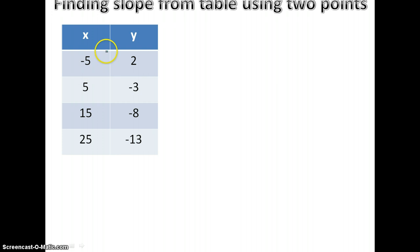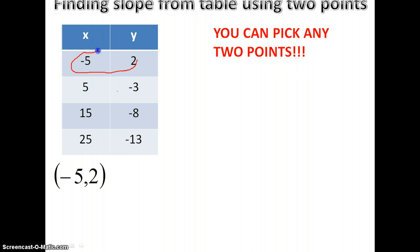So let's look at an example. We're going to find the slope from a table using two points. So if I'm given this table, I can find the slope by using two points. Now, I may choose any two points I would like. You can pick any two points you wish. I'm going to choose negative 5 comma 2. So I'm going to choose this first one. And then I'm going to choose 15 comma negative 8. So those are the two points I chose. But I could choose any point. Now, remember an ordered pair is x comma y. So, this is going to be x1 because this is my first x. And this is going to be y1 because that's my first y. And then this is x2 because it's my second x. And this is y2 because it's my second y.